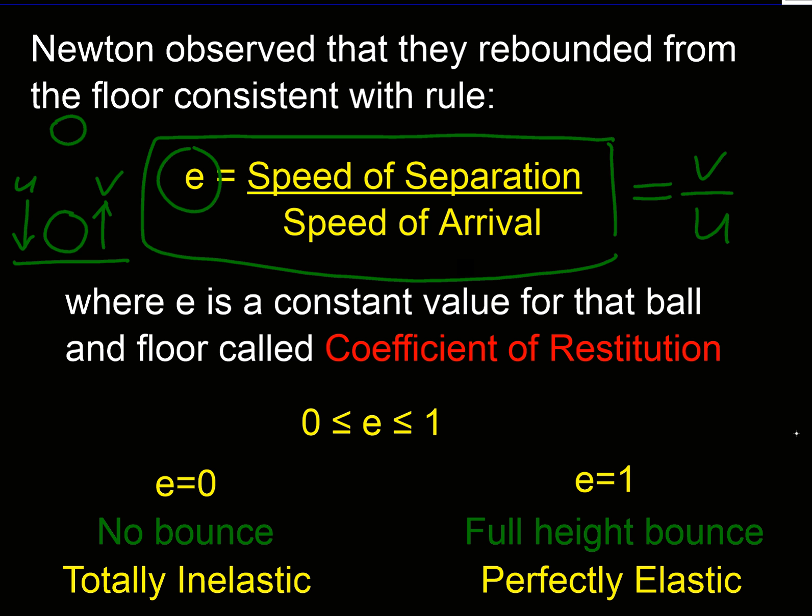It's not always the same if you change the ball or you change the ground. It's dependent on the pairing, the setup. So he found that this was a constant ratio, e.